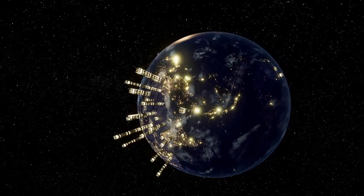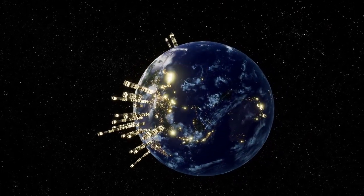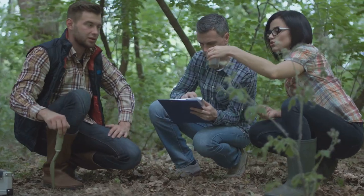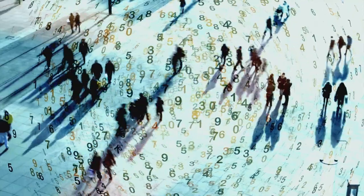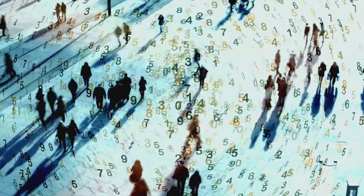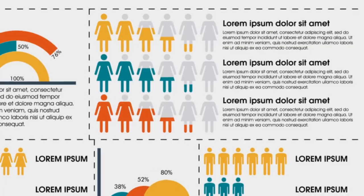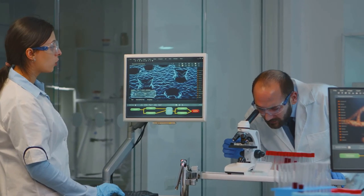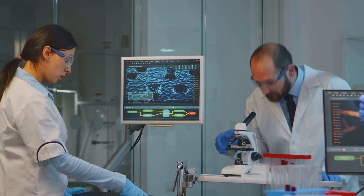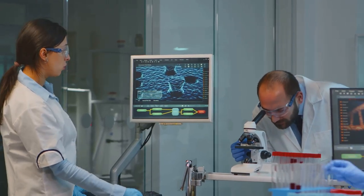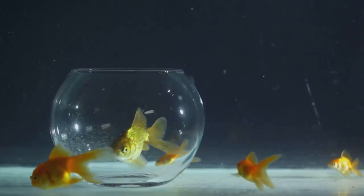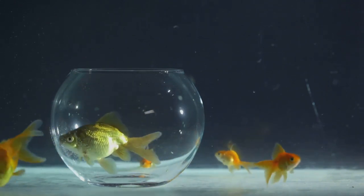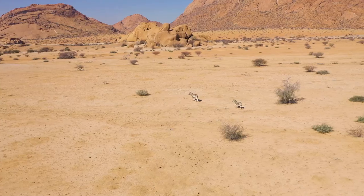Population size refers to the total number of individuals of a particular species in a given area — it is a fundamental measure in population ecology. Population density, on the other hand, measures how crowded a population is, representing the number of individuals per unit area. These two metrics provide valuable insights into the health and sustainability of a population.